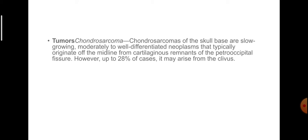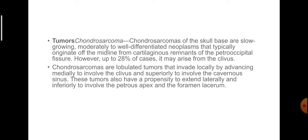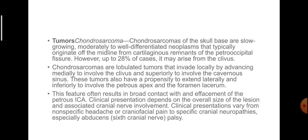Tumors — Chondrosarcoma: Chondrosarcomas of the skull base are slow-growing, moderate- to well-differentiated neoplasms that typically originate off the midline from cartilaginous remnants of the petrooccipital fissure; in up to 28% of cases they may arise from the clivus. These lobulated tumors invade locally — medially to involve the clivus, superiorly to involve the cavernous sinus, and laterally and inferiorly to involve the petrous apex and foramen lacerum — often with broad contact with the petrous internal carotid artery. Clinical presentation ranges from non-specific headache or craniofacial pain to specific intracranial neuropathies, especially abducent palsy.